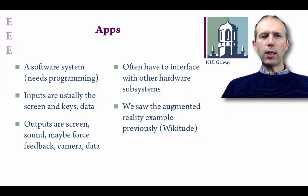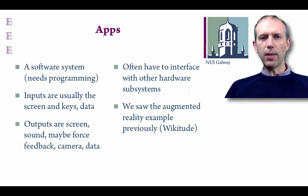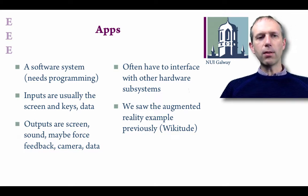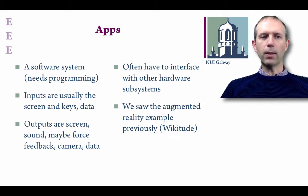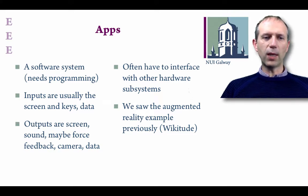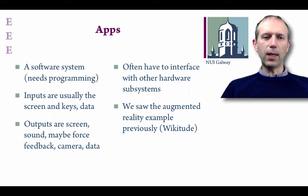Apps are essentially programs or applications that run on top of an operating system, which is the base software that a mobile phone or computer operates on. Typically these software systems, which have to be programmed, take some kind of inputs and produce some kind of outputs. In a mobile phone the inputs are typically the screen, maybe some buttons or data or sensed information, and the outputs are, for example, the screen again — because it's not just an input but also an output device — maybe sound, haptic feedback, camera data and so on.